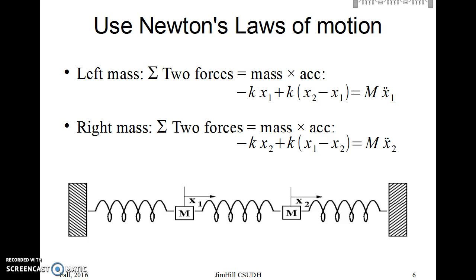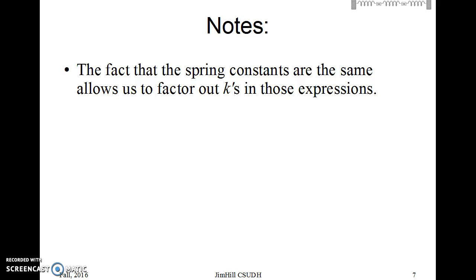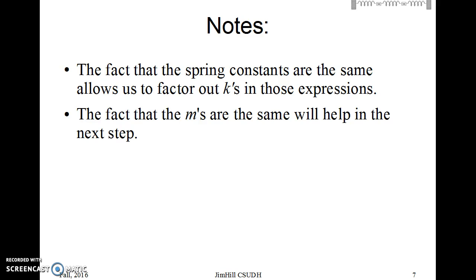So now we've got a couple of equations, and we want to find out what goes on. Now, the fact that the spring constants are the same is going to allow us to factor out k's in those expressions. Of course, if they weren't the same, this would be a more difficult problem. It would still be solvable. Same is true for the masses. They're the same. That's going to make things easier as we go on. At this step, when I factor things out in each equation, it doesn't make any difference. But when I put the equations together, it does make a difference.